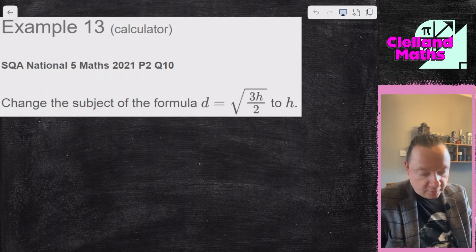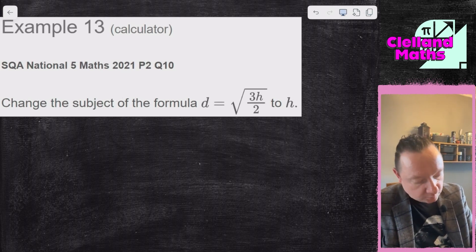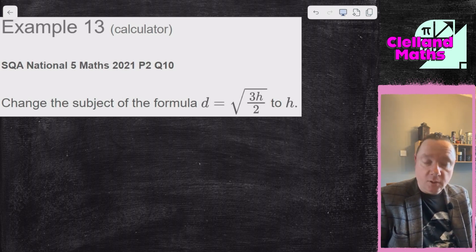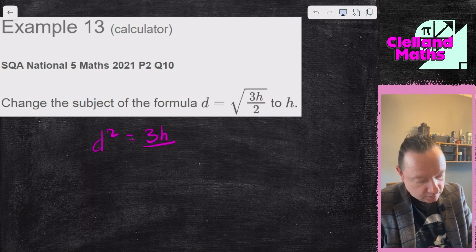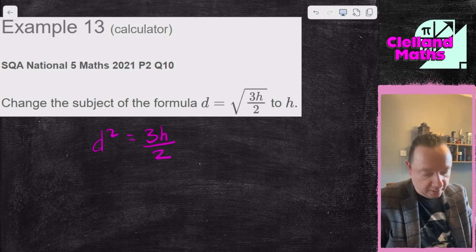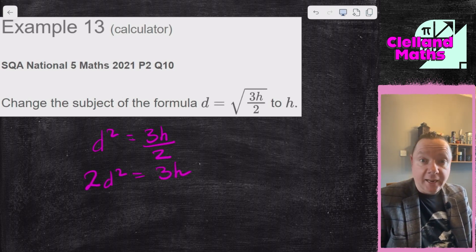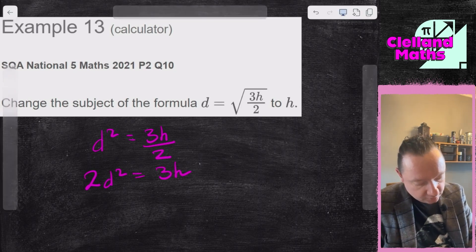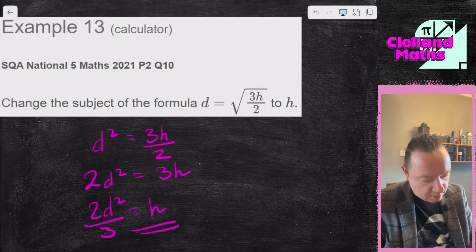Example 13 — SQA National 5 Maths 2021, Paper 2, Question 10. Change the subject to h. It's stuck under a square root, so square both sides: d² = 3h/2. Times by the denominator: 2d² = 3h. Finally divide by 3: h equals 2d² over 3. And we're done.